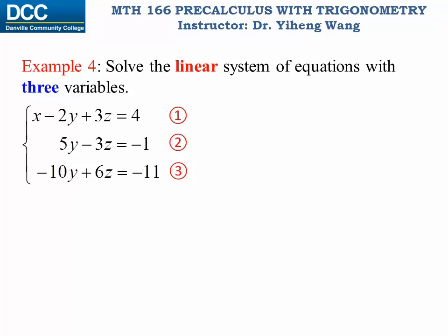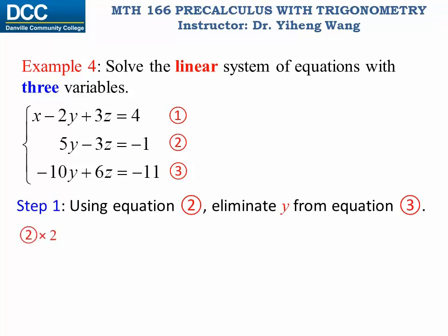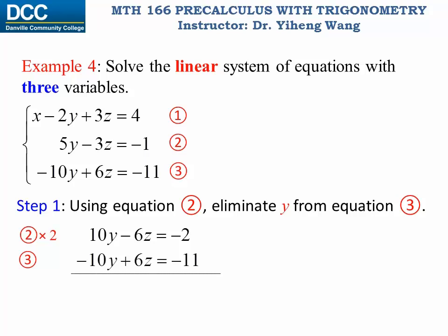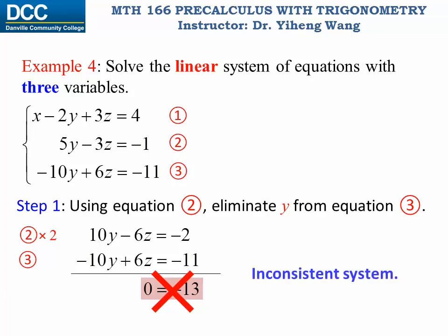Let's quickly look at another system of three equations and three unknowns, which we want to solve using Gaussian elimination. Since equation two is already missing x, we need to eliminate y from equation three using equation two. When we apply the method of elimination and add these two equations together, we realize that not only do we eliminate y, but we eliminate z at the same time. As a result, the left-hand side is zero but the right-hand side is negative thirteen. Zero equals negative thirteen is obviously a false statement. This type of system is known as an inconsistent system, and therefore this system has no solution.